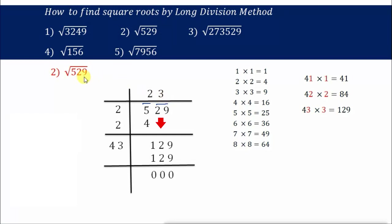Since we get remainder 0, the answer is 23. So the root of 529 is 23. That means 23×23=529. As simple as that! We will see the next problem.